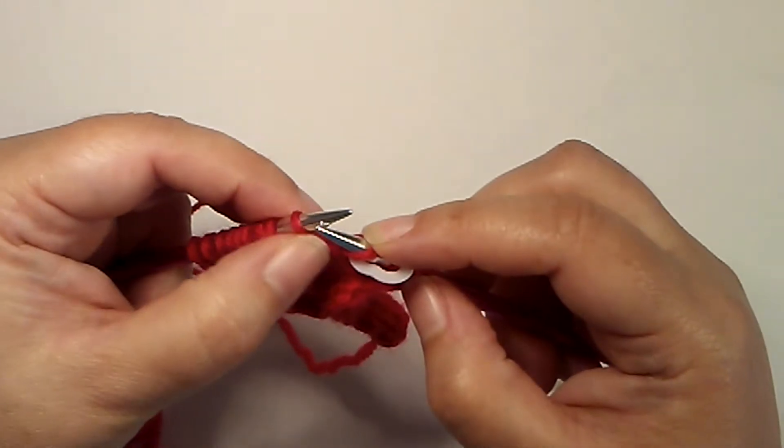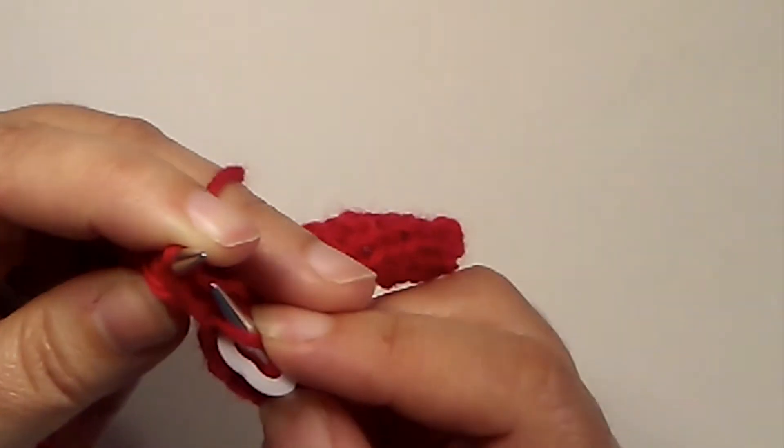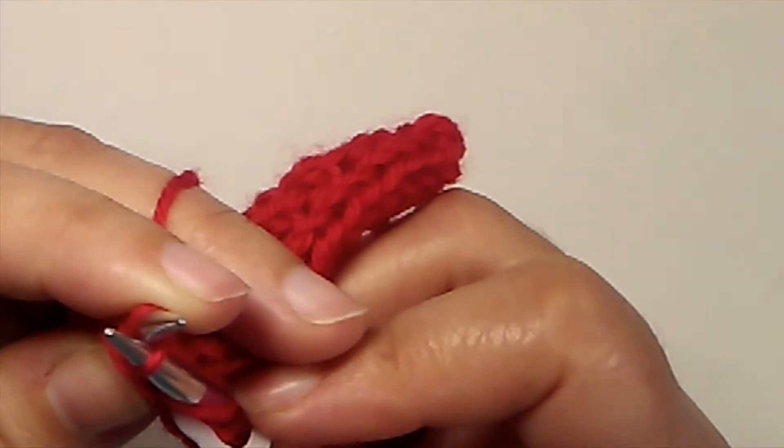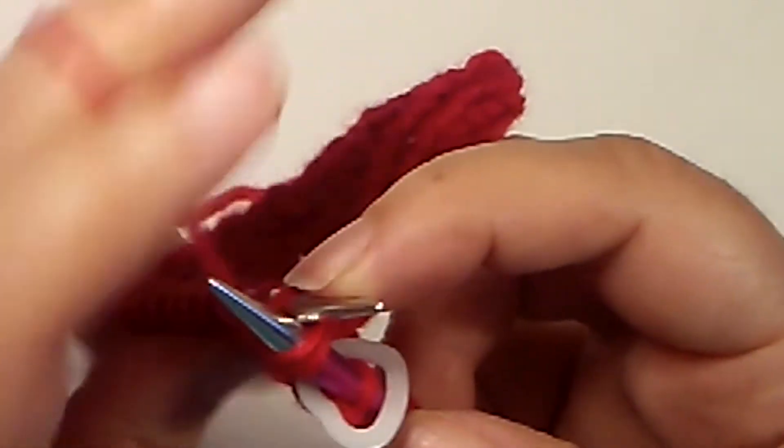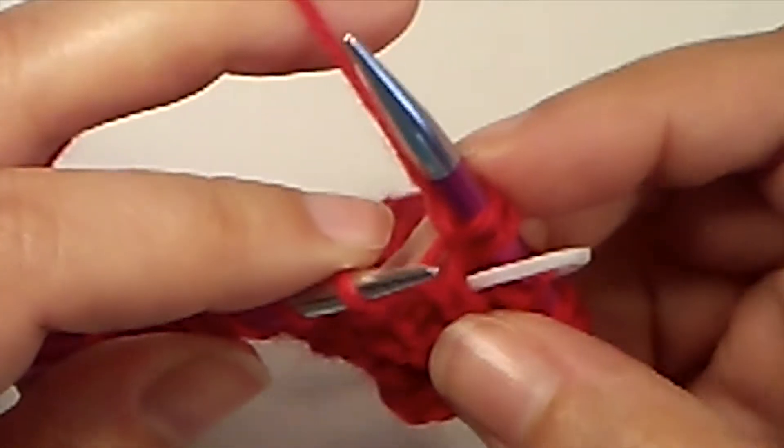You can see the legs of the stitch—there's the right leg in the front, left leg in the back. I want to insert this way and purl that leg of the stitch, and now I can drop it off the needle.